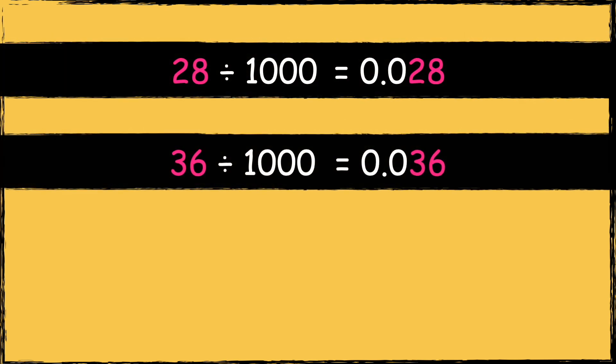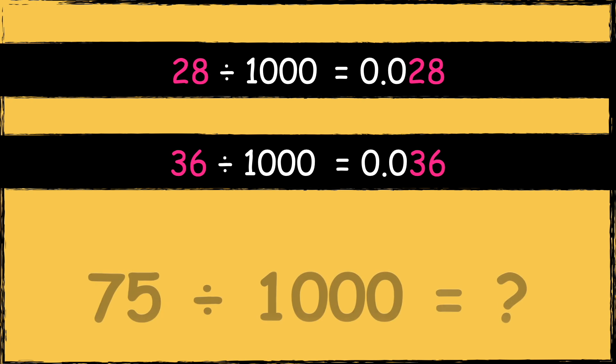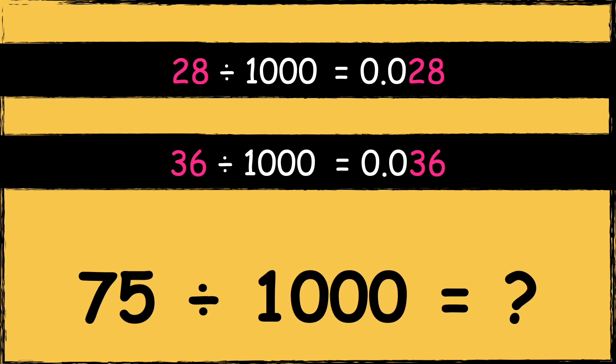Now it's your turn. Do you notice a pattern when we divide two-digit numbers by a thousand? What do you think seventy-five divided by a thousand will be? Let me know your answer in the comments.